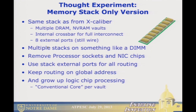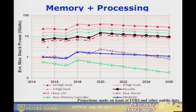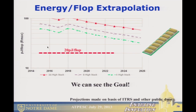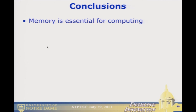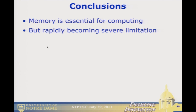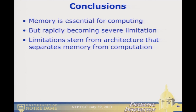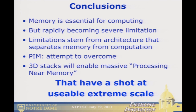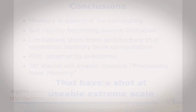The thought experiment going forward: remove the processor sockets and the NICs, and all you keep are stacks of enhanced memory. Power for that looks like on the order of 25 watts per stack, and when you do a flop projection, you're at least in shooting range. Conclusions: memory — we absolutely need it, we don't have enough of it, and it's going to get worse. Limitations come from architectures that separate memory from computation. PIM was an attempt to overcome that. I really believe that 3D stacks enabling massive processing near memory have a much better shot at allowing us to build extreme-scale systems.